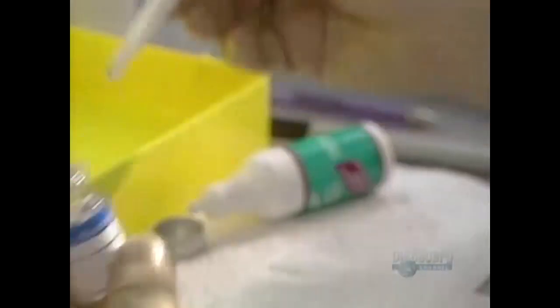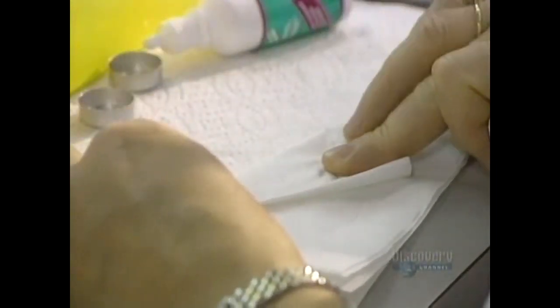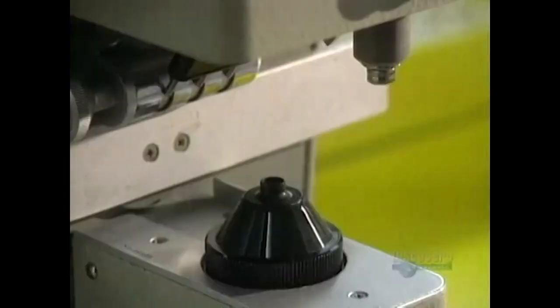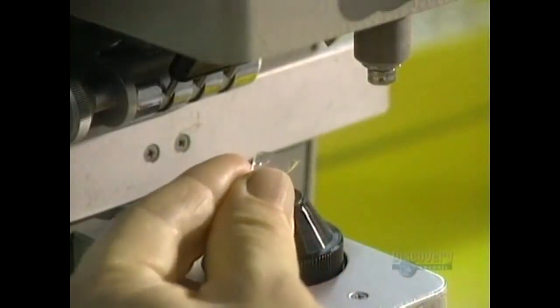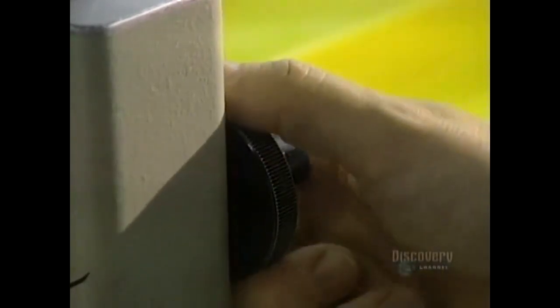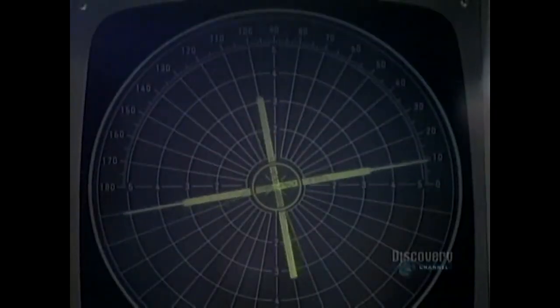And now we proceed with another important testing procedure. The soft, fragile lenses are always handled with the greatest of care. This unit, called a frontofocal meter, is a metering device which verifies the optical precision of the lens.